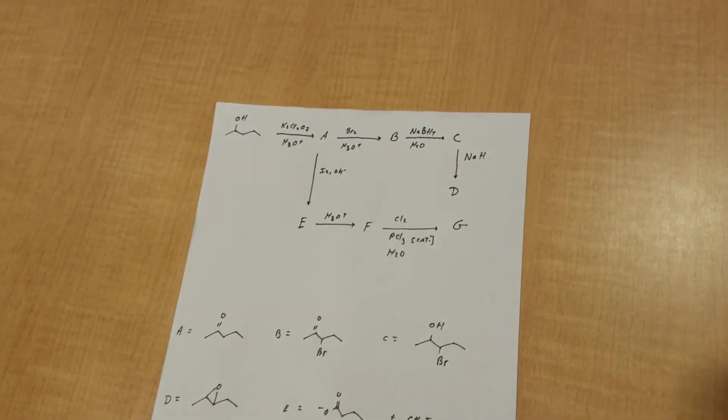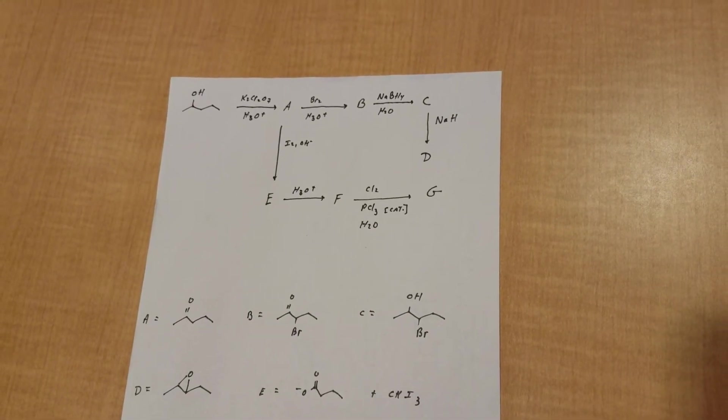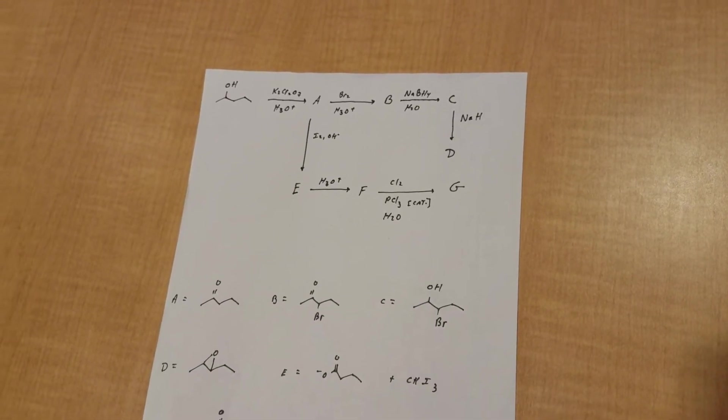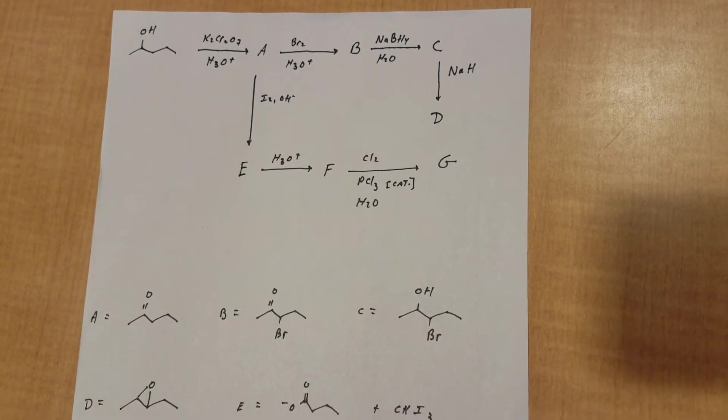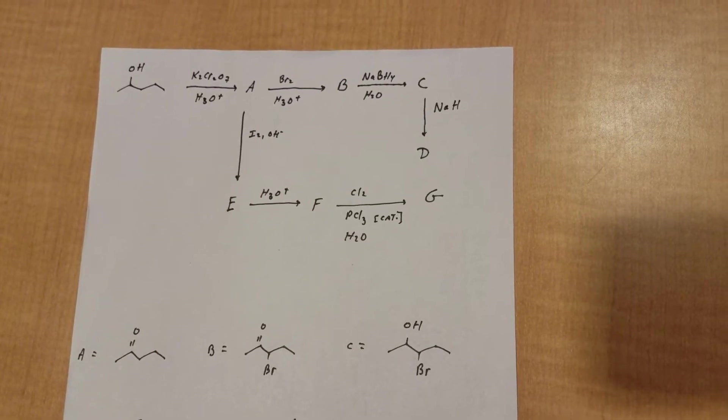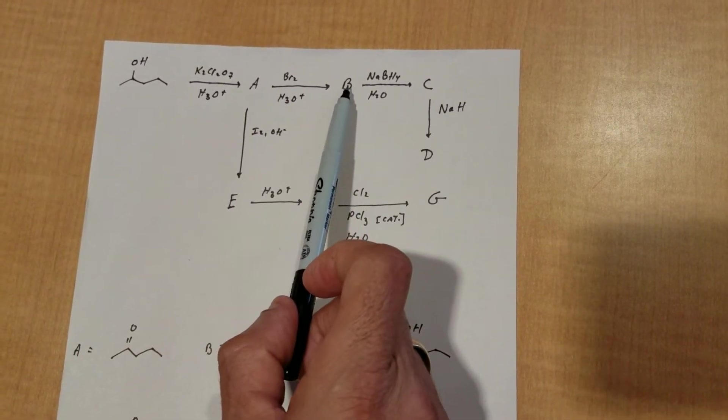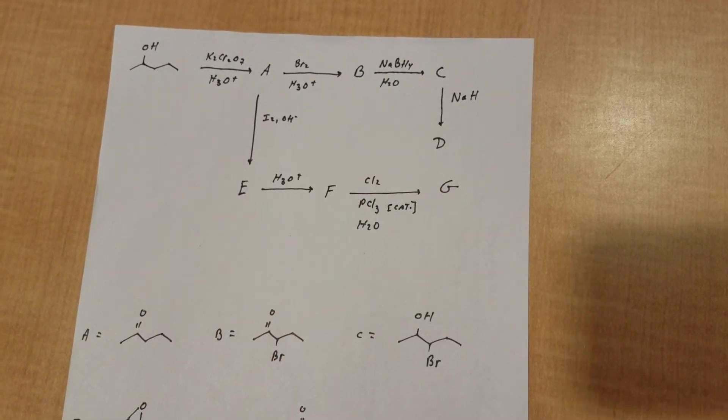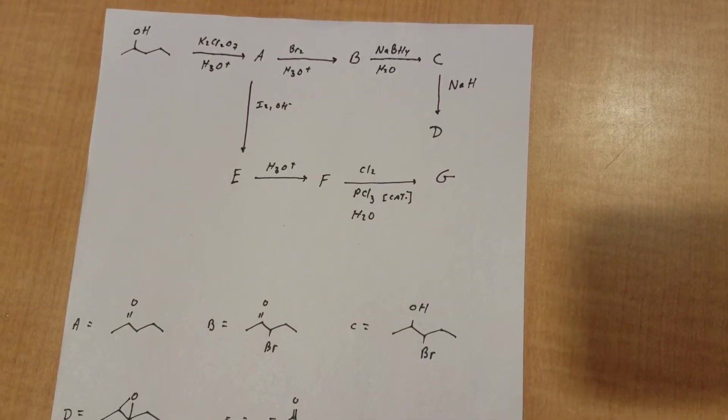Now, what I want to do is what I call a roadmap, and all of these reactions are pertinent to the DAT exam, and you should be able to know how to do them all. Here we go. What we're going to do is we're going to take a molecule known as 2-pentanol, and I'm going to do several things with it. I'm going to first oxidize it and get A. I'm going to halogenate it to get B. I'm going to reduce it to get C, and then I'm going to treat it with NAH to get product E.